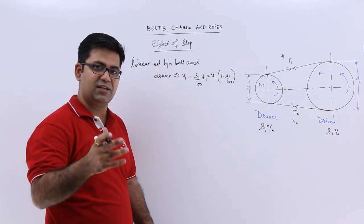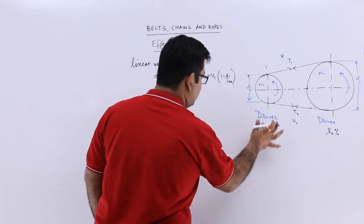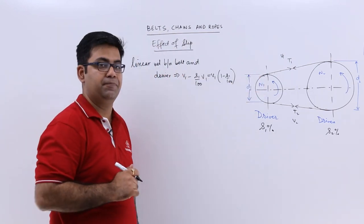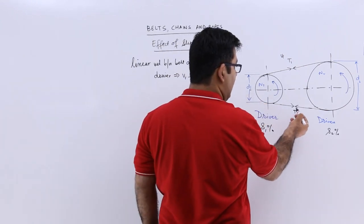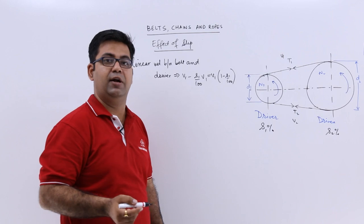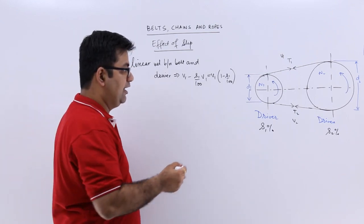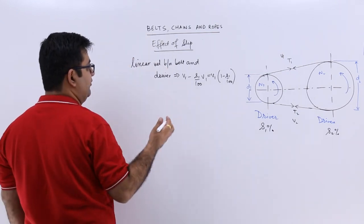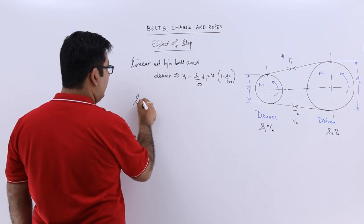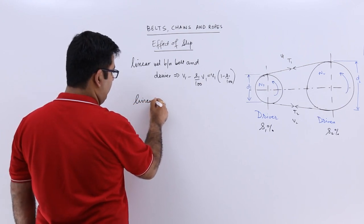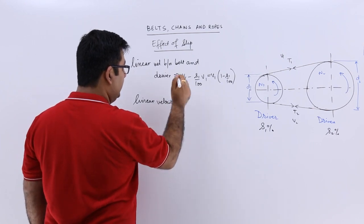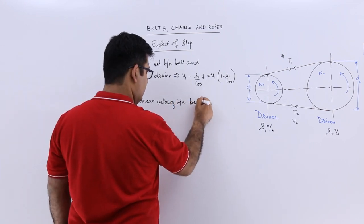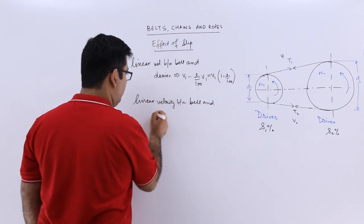Now this velocity is coming out of the driver and is going into the driven pulley. So the driven pulley, we know, has a velocity v2. So the linear velocity between the belt and driven pulley is v2.